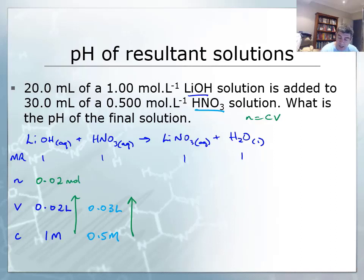But for the nitric acid, I have 0.5 times 0.03, so this one's going to be 0.015 moles. When this reaction occurs, because my ratio is 1 to 1, I have a limiting agent. I have one of my species which cannot fully react with the other. So this is limiting and this is in excess.